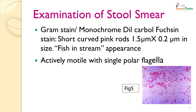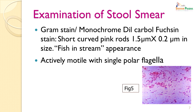A smear was made from the stool sample and stained by a Gram stain and a monochrome dilute carbol fuchsin stain. Short curved pink rods about 1.5 microns by 2 microns in size were seen. They gave a fish-stream appearance because they were present joined to each other in long parallel rows. On hanging drop, they were seen to be actively motile with a single polar flagellum.